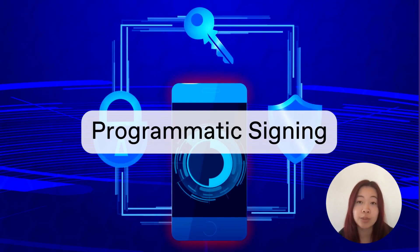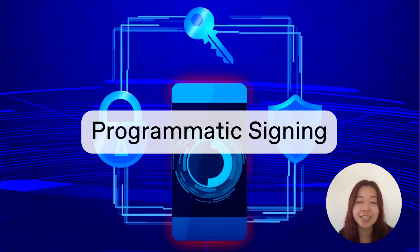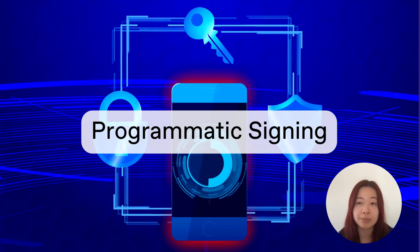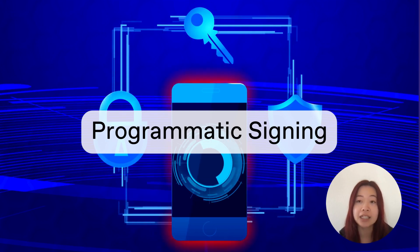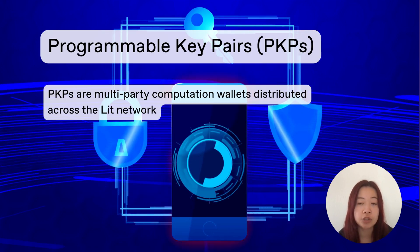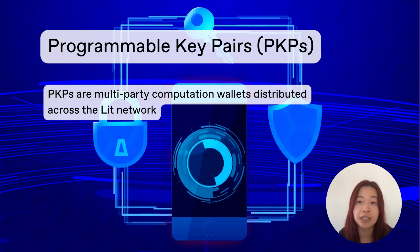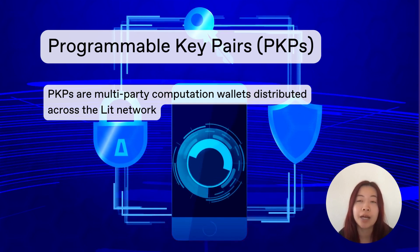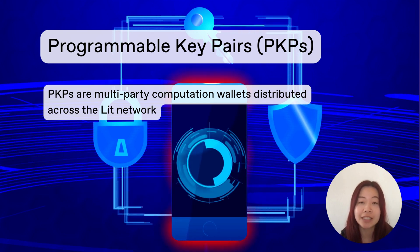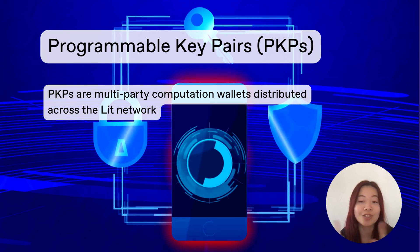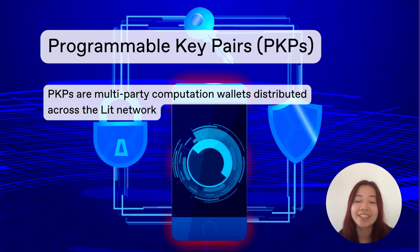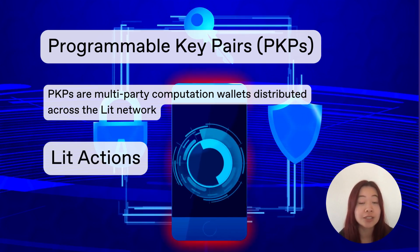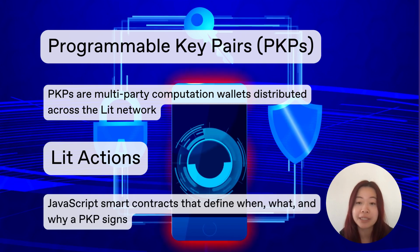LIT goes beyond encryption with its programmatic signing capabilities. It allows you to program complex signing automations using programmable key pairs, or PKPs, and LIT actions. PKPs are multi-party computation wallets distributed across a LIT network, while LIT actions are JavaScript functions that define when, why, and what a PKP signs.